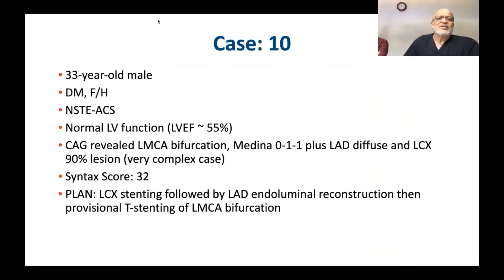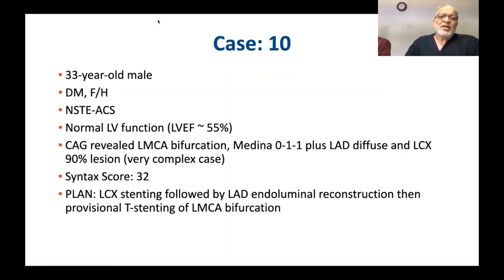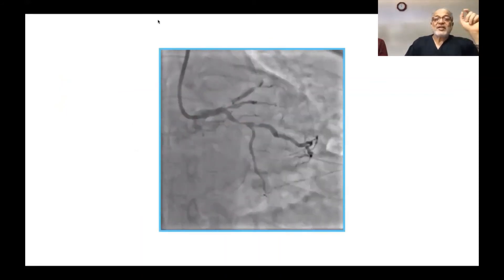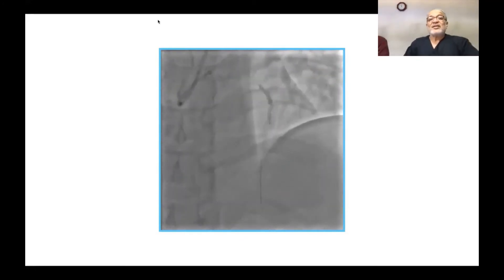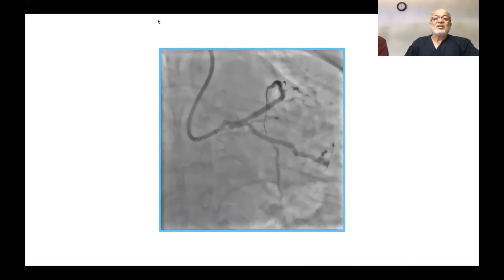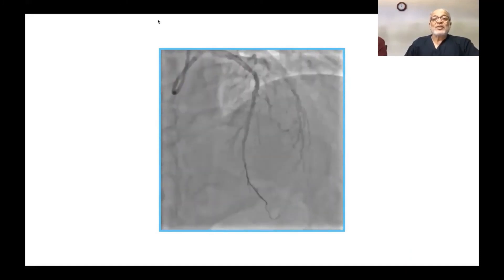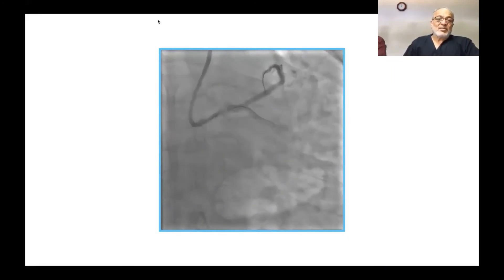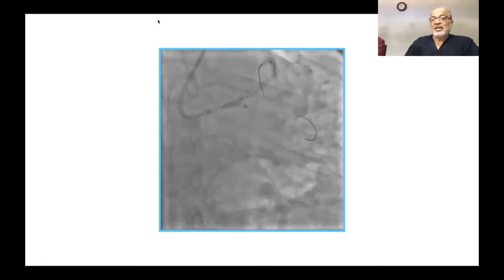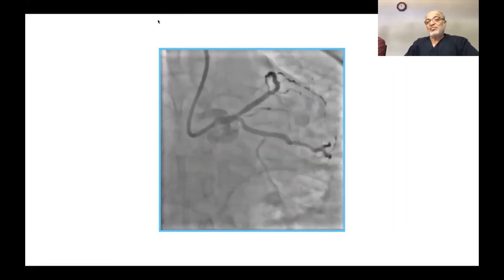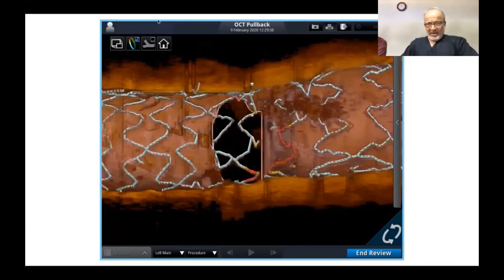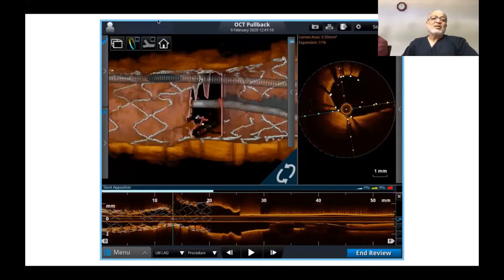A very complex case — a 33-year-old young man, a surgical case with refusal, done as the last live demonstration case. Left main bifurcation Medina 011 with diffuse LAD disease and circumflex 90% lesion, syntax score 32. We first stented the circumflex, then performed full LAD endoluminal reconstruction using two stents. We did not deploy extra stents unnecessarily. The final result after kissing balloon was acceptable — link-connecting carina, although it was a distal crossing.